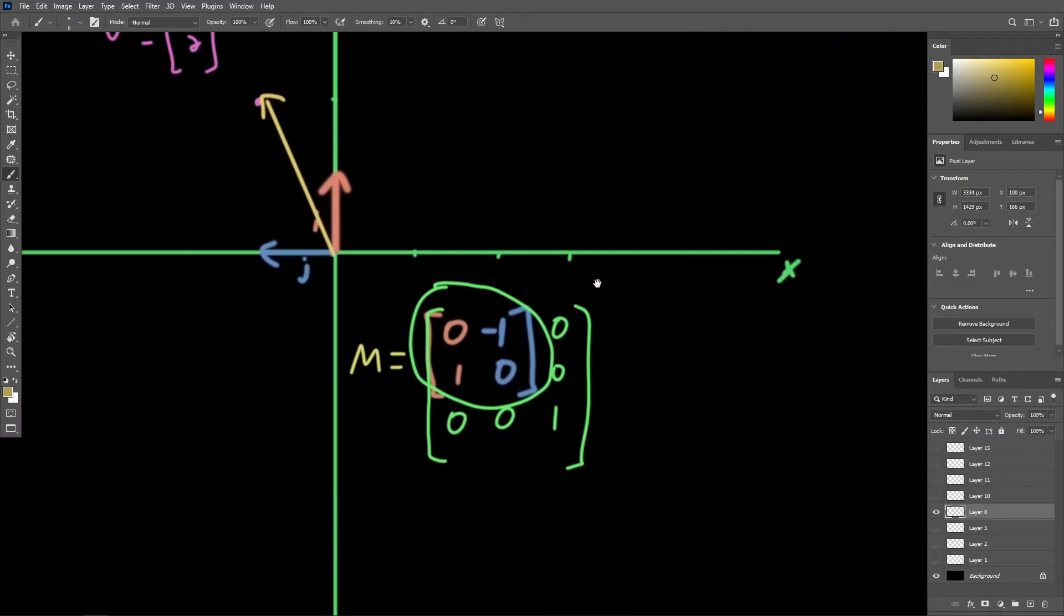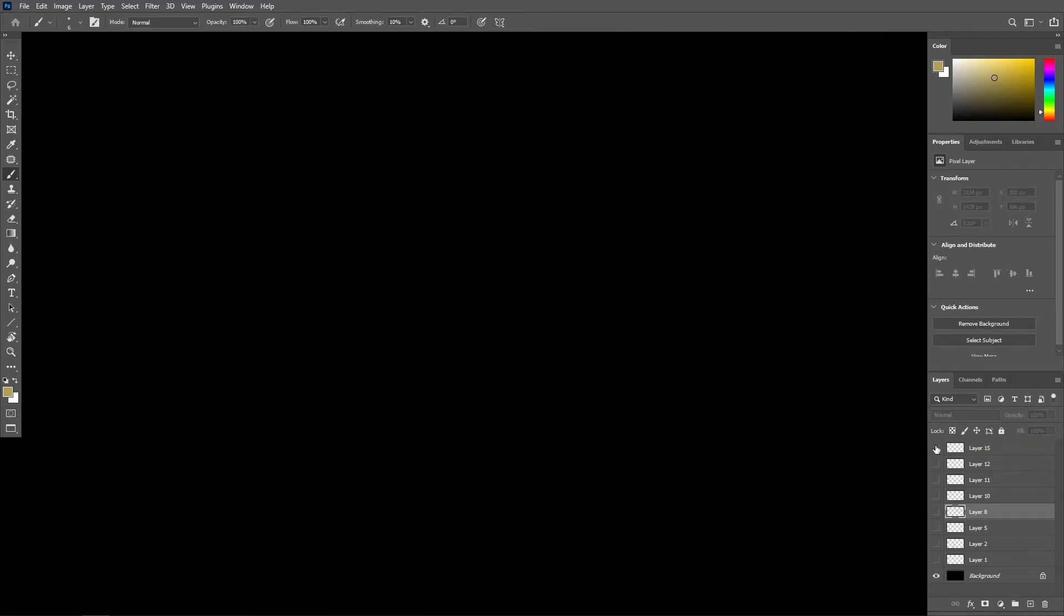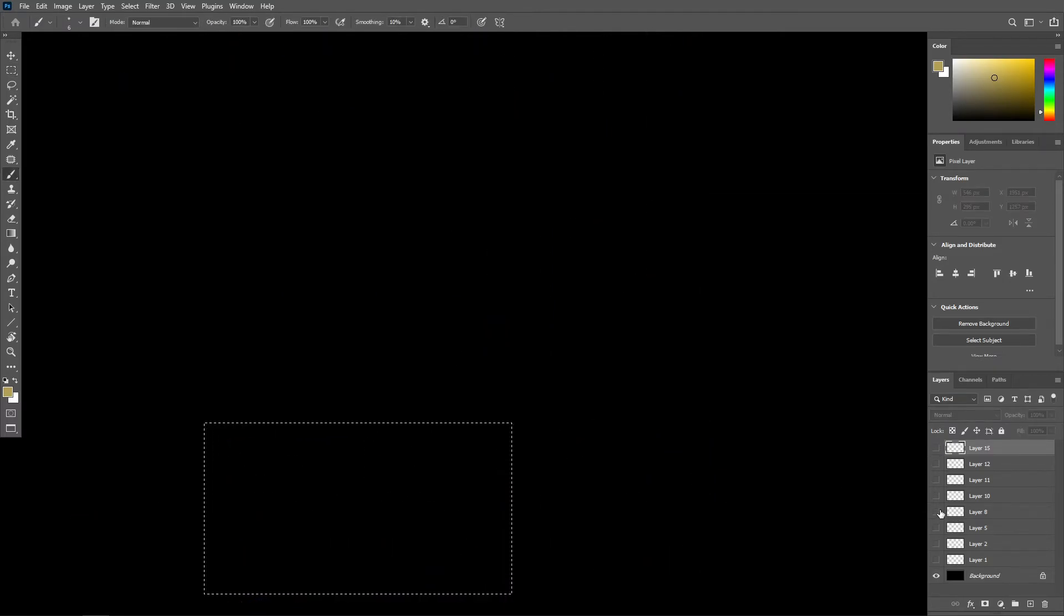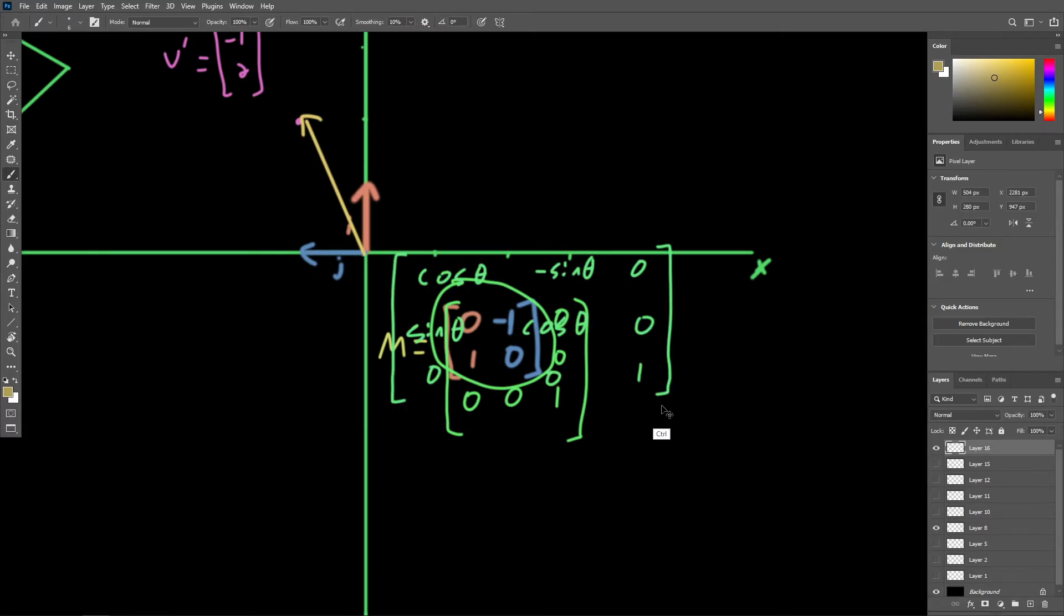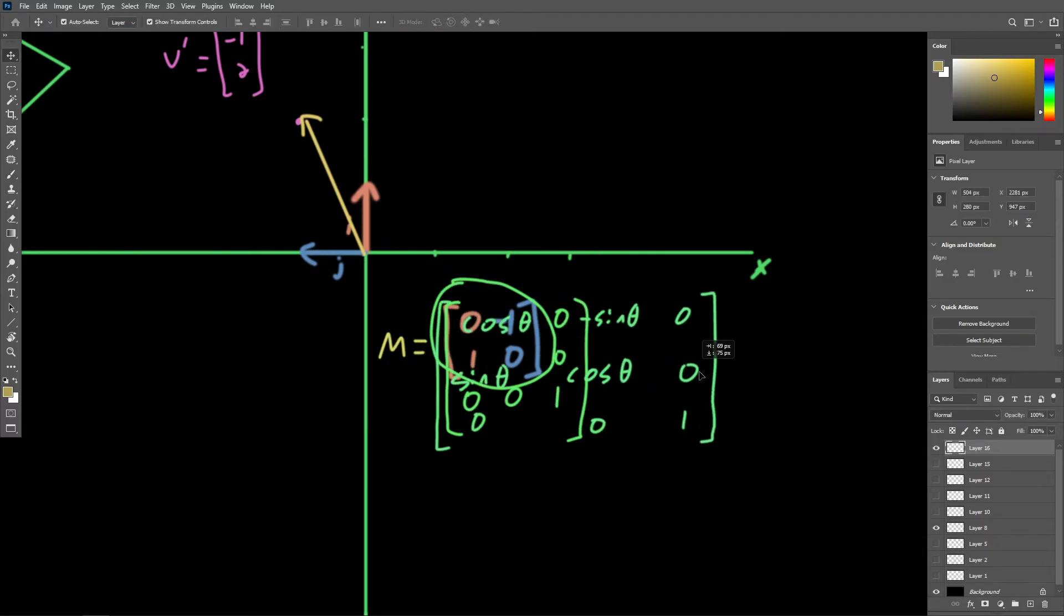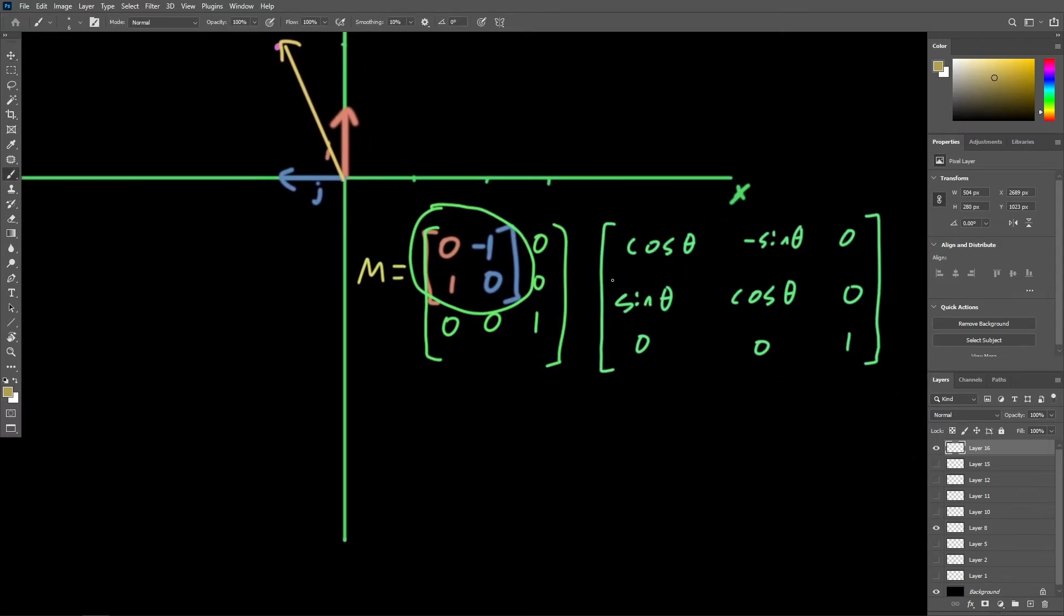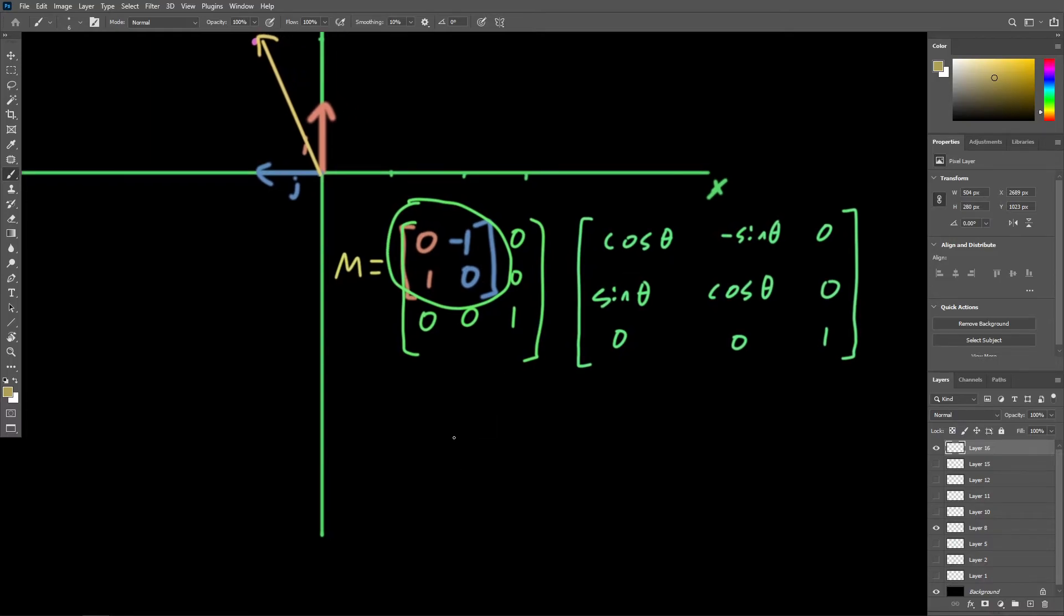So what was the angle that we were working with here? Well, it was equal to 90 degrees. It was a 90 degree rotation. So let's just copy this and put it beside this other matrix that we're comparing it to. Let's put it right here. What's the cosine of 90 degrees? Well, that's zero. What is the sine of 90 degrees? Well, that's one.